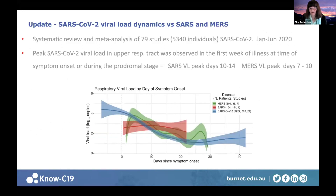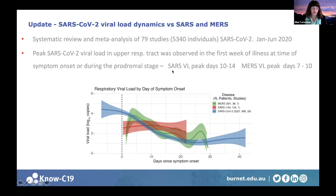Now for an update on SARS-CoV-2 viral dynamics compared to SARS and MERS, based on a recently published systematic review and meta-analysis of 79 studies with over 5,000 individuals with SARS-CoV-2, published from January to June of this year. They found that peak SARS-CoV-2 viral load in the upper respiratory tract occurs in the first week of illness at symptom onset or during the prodromal stage — in contrast to SARS and MERS, where peaks occur later in the infection process.